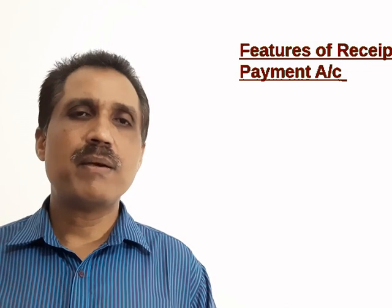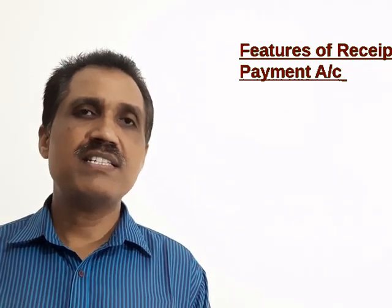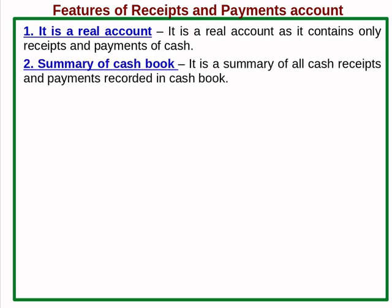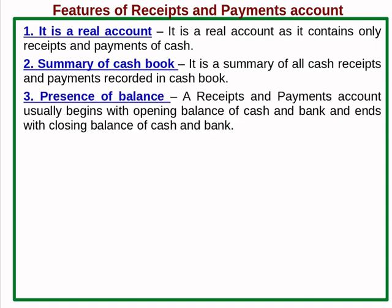Features of receipt and payment account: First, it is a real account, as it contains receipts and payments of cash. Second, it is a summary of the cash book — it is a summary of all cash receipts and payments recorded in the cash book. Third, the receipt and payment account usually begins with the opening balance of cash and bank and ends with the closing balance of cash and bank.